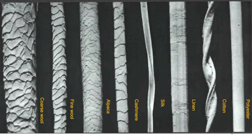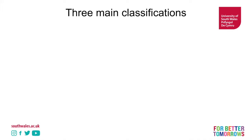You can see that with everything except polyester, the surface of the fibre is not consistent. That is because they're from natural origins, whereas polyester is a consistent fibre because it is produced using synthetic materials. We'll get into more on that later on.